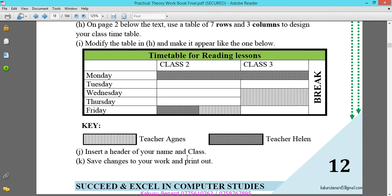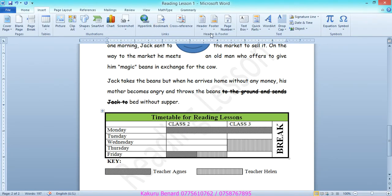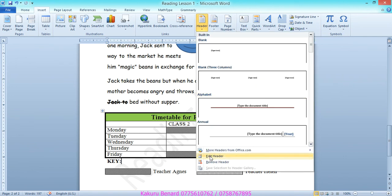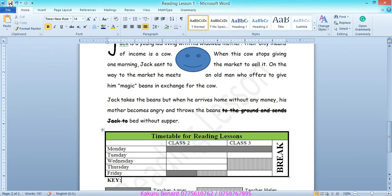Insert a header of your names and class. We go to insert and the headers and footers, click on header, move down to edit header, and then you put your names. Kakuru Bernard S4 Blue or S4 West. You close header footer or double click in your work. Save changes.